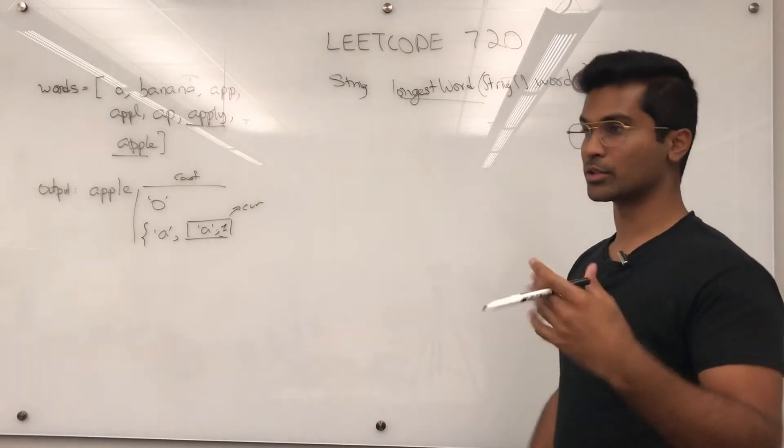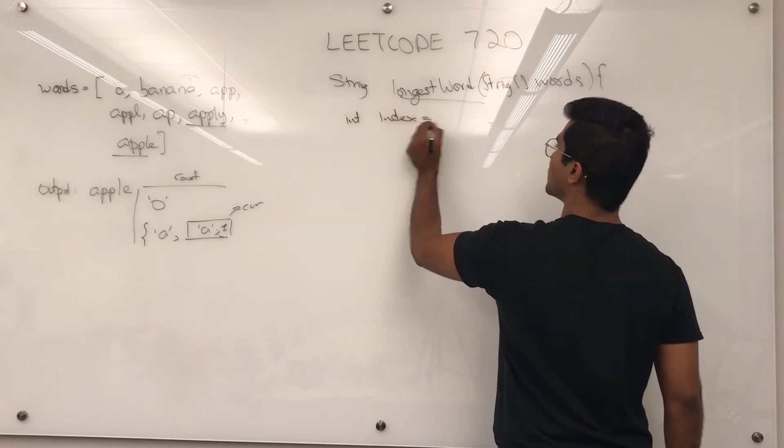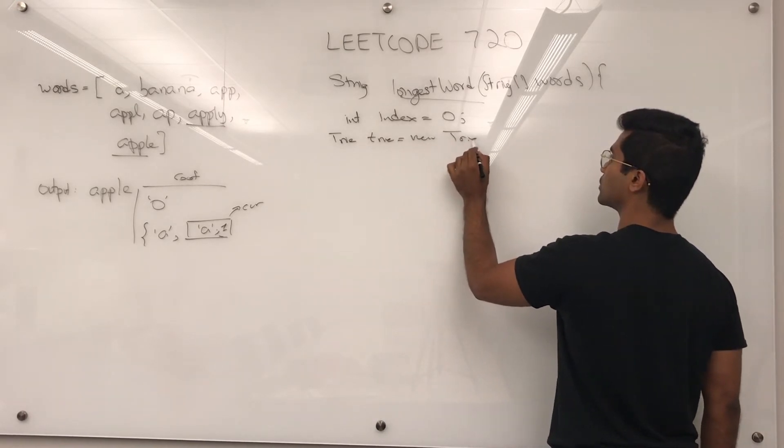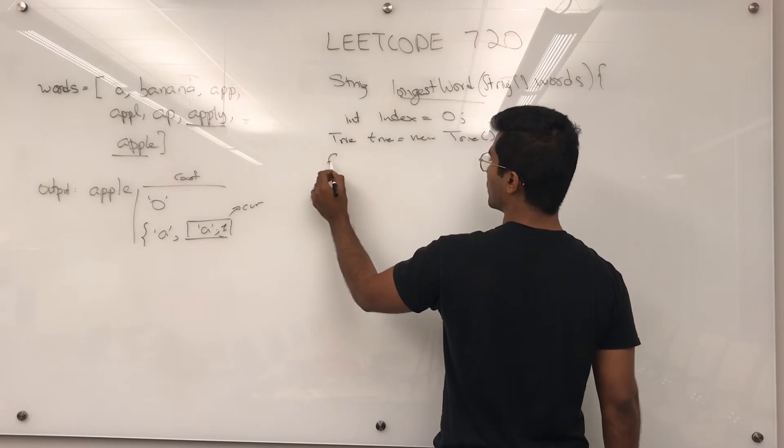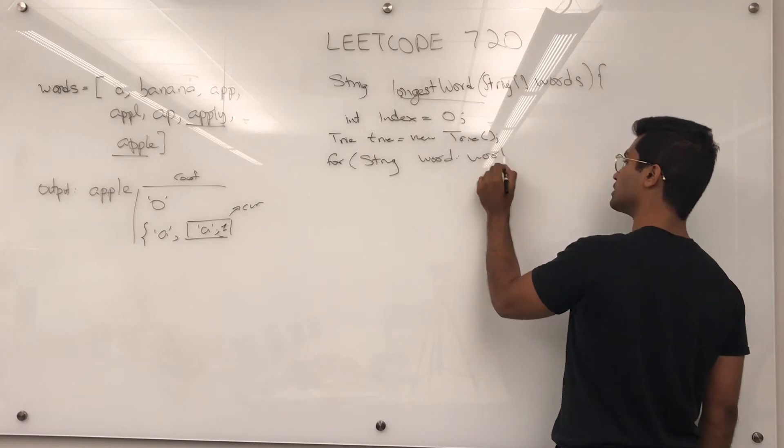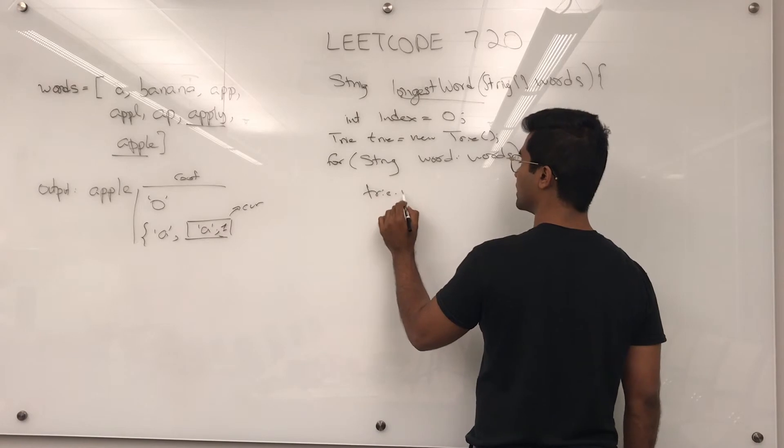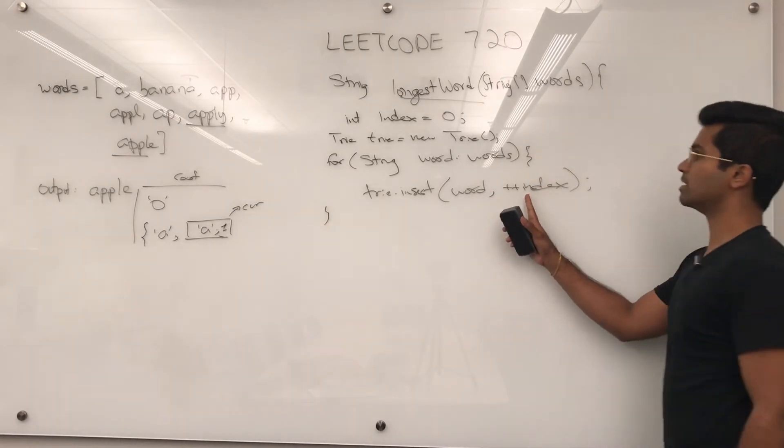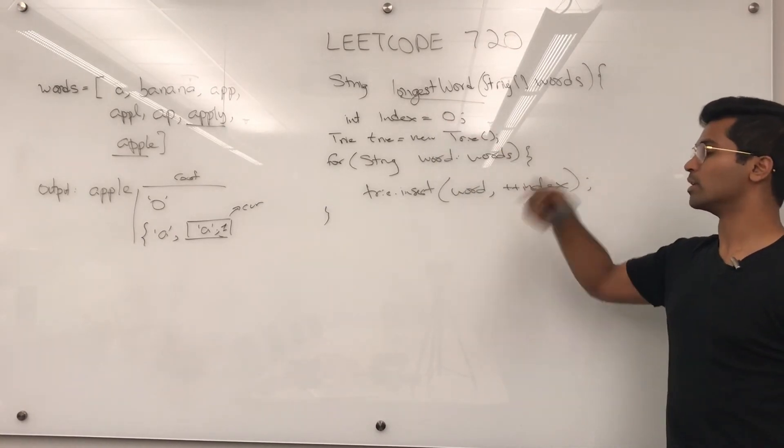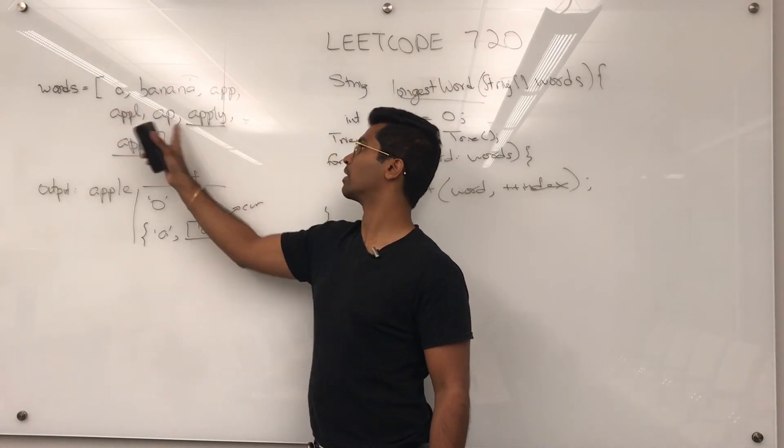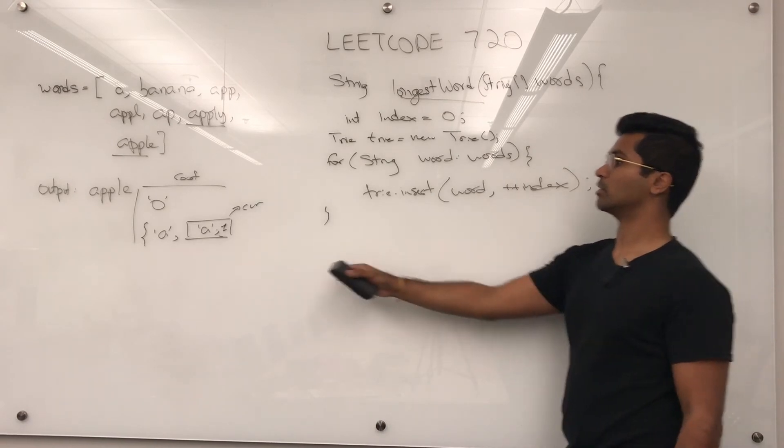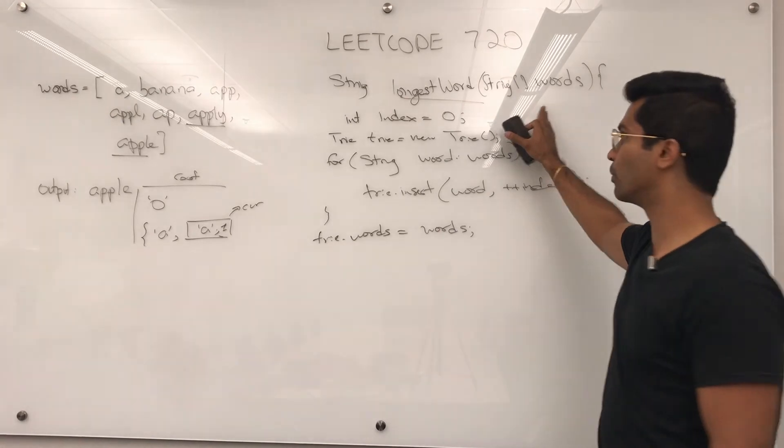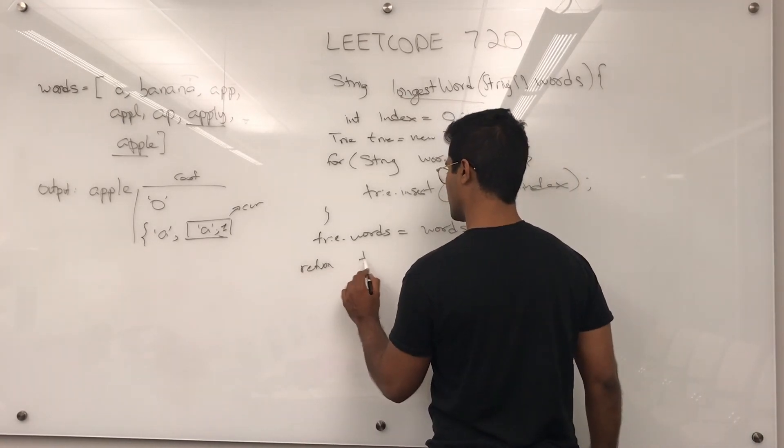Now that we wrote everything in our trie that we need, what we can do is first say int index = 0 and then initialize a new trie. Trie is going to be new trie. And for string word through words, we're going to do trie.insert word, ++index. Now this is a pre-increment. So this is actually going to be one and then two and then three and then four, five, six. So this is actually going to have an end index of one, two, three, four, five, six, seven, not zero indexed. Now that's going to go into the insert. Now trie.words is going to be set to this words. We're pretty much giving our trie a copy of this words array. And then all we have to do is say return trie.DFS.